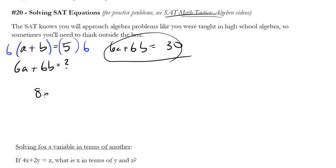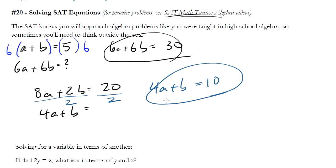Here's another example: 8a plus 2b equals 20, what is 4a plus b? Again, I can't solve for a or b individually, I can't do any substitutions, can't stack them, none of that stuff, but I can see that, well wait a minute, let me go ahead and divide this by 2. When I do that I'm going to get 4a plus b on the left, and that's going to equal 10, and there we go, done.